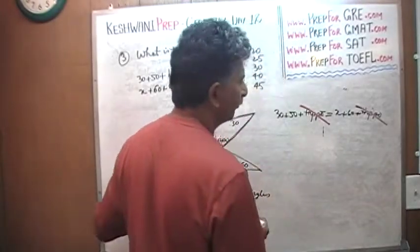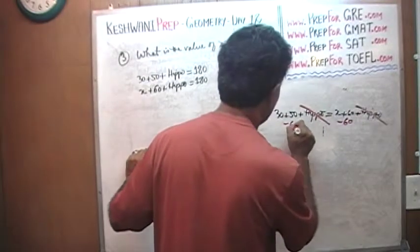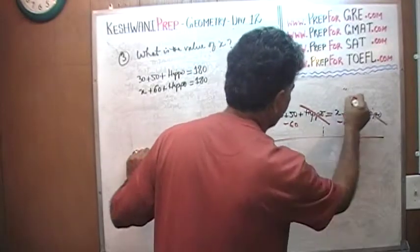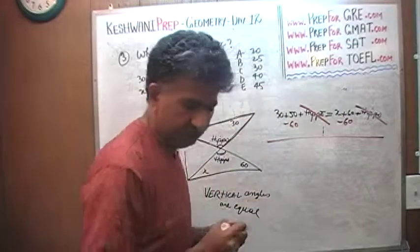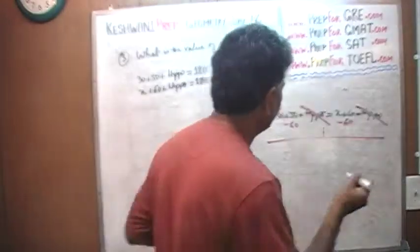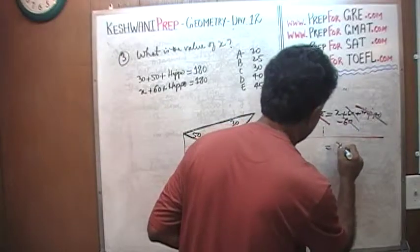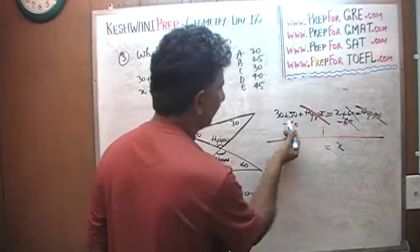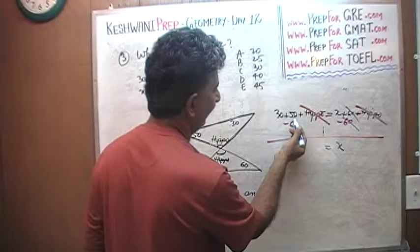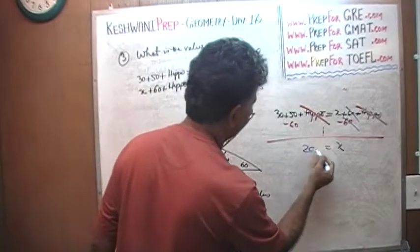Now we want to solve for x. Subtract 60 from both sides. If you subtract 60 from both sides then this 60 will drop out. And on this side all we are left with is x which is 50 plus 30 plus 50 which is 80 minus 60. Voila, x is 20.